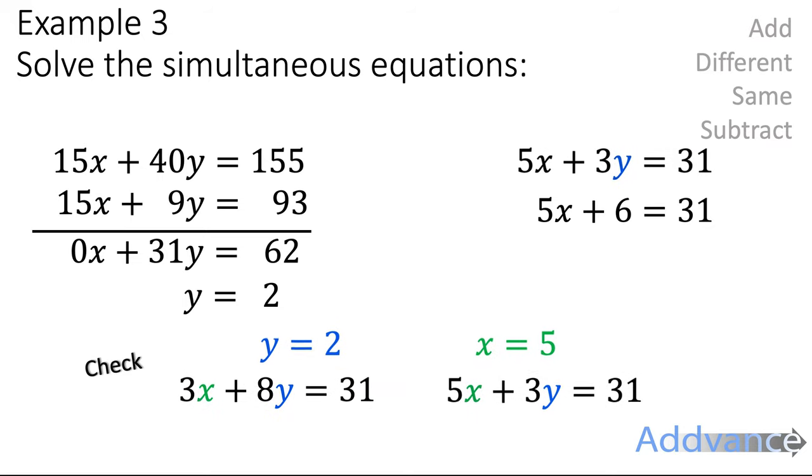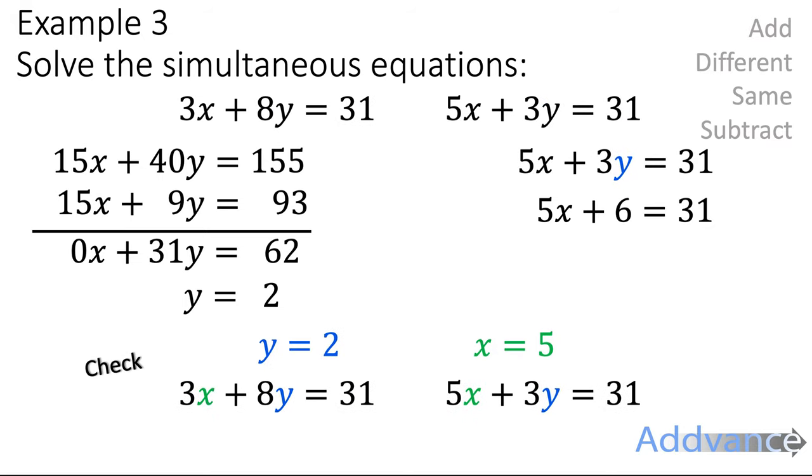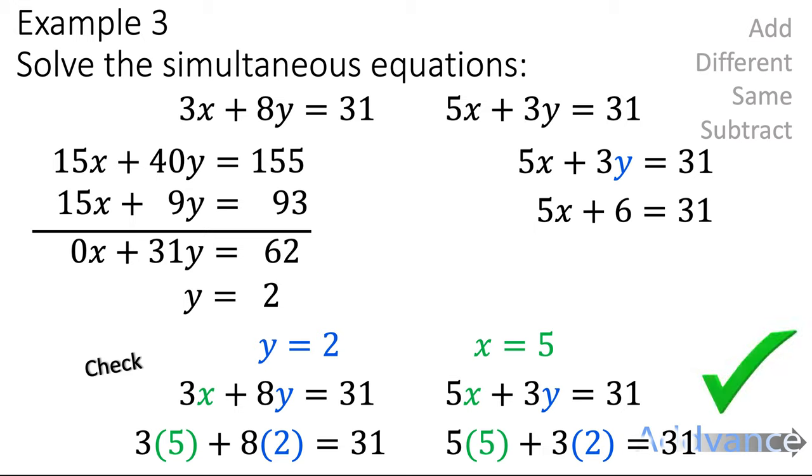And we're going to just check by substituting those back into the equations, the original two equations like this. And we get that they do make sense if you work that out. So we are absolutely certain that our two values x and y are correct. And that is the answer to question 3. x equals 5 and y equals 2.